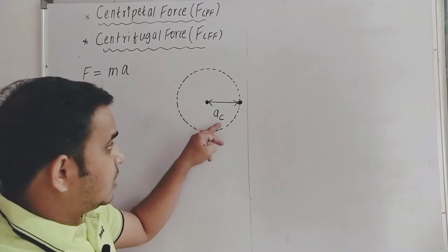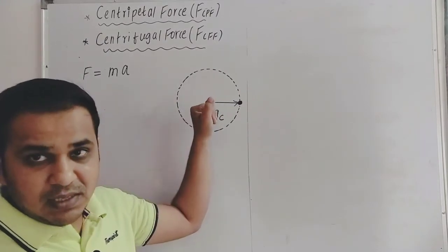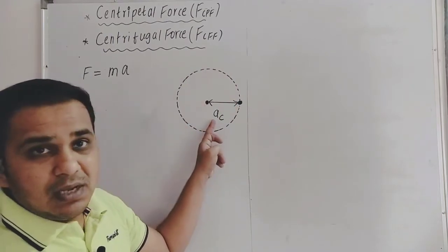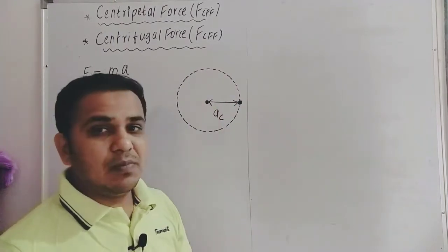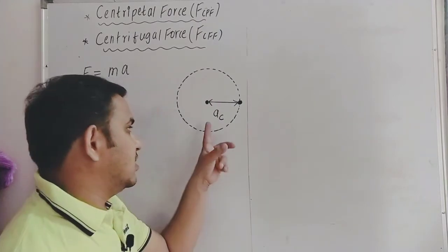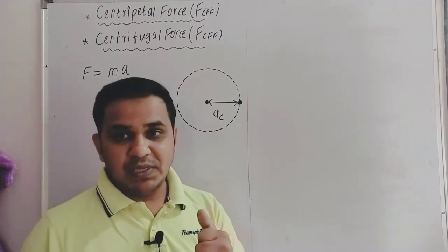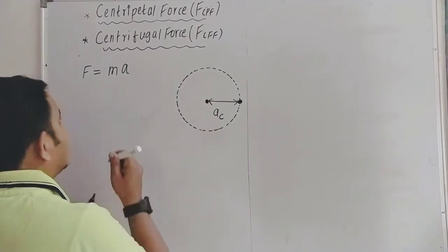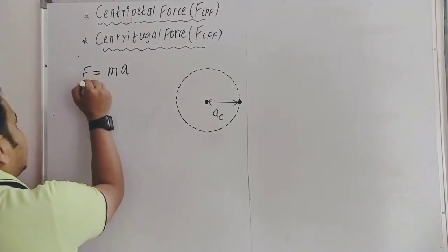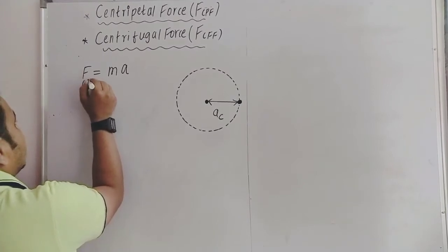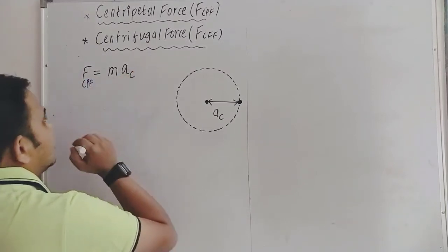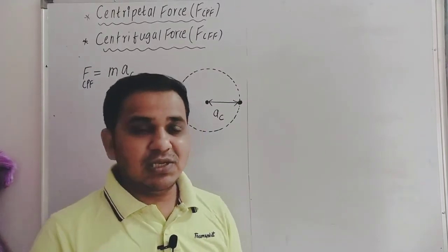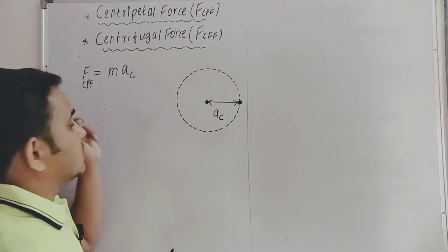Why does centripetal acceleration arise? It is due to the change in velocity, and this change in velocity occurs when a particle performs circular motion. If centripetal acceleration is present, then there must be some force that has developed this acceleration. That force is what we call centripetal force, and centripetal force is what produces centripetal acceleration.